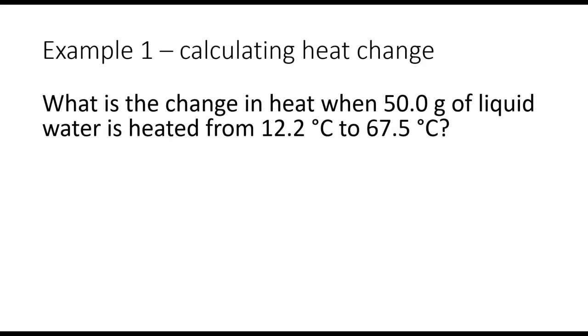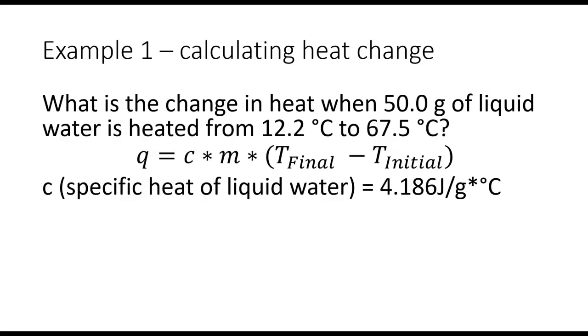What is the change in heat when 50.0 grams of liquid water is heated from 12.2 degrees Celsius to 67.5 degrees Celsius? So here we want to make sure and bring our equation over. So our heat equals our specific heat times mass times the change in the temperature. We need the specific heat of water. The specific heat of liquid water is 4.186 joules per gram degrees Celsius.